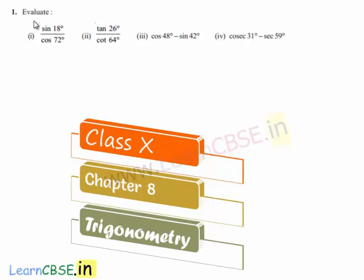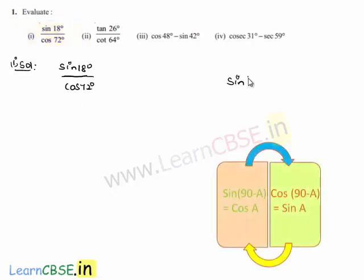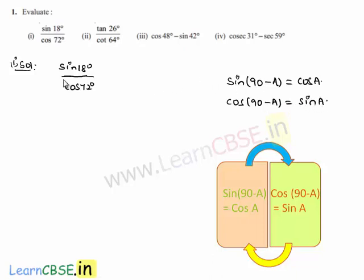Moving on to the first question: evaluate sin 18 degrees divided by cos 72 degrees. The given expression is sin 18 degrees by cos 72 degrees. Let us express both numerator and denominator in the same trigonometric ratio. We have sin of 90 minus A is equal to cos A, and cos of 90 minus A is equal to sin A. Using these two identities, let us convert both into a single trigonometric ratio.